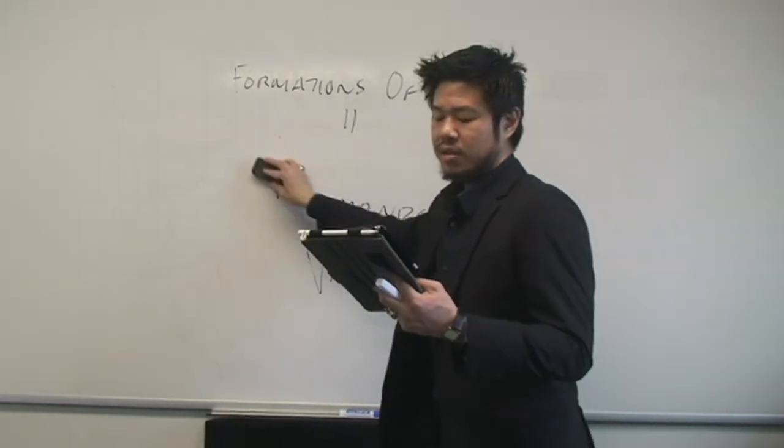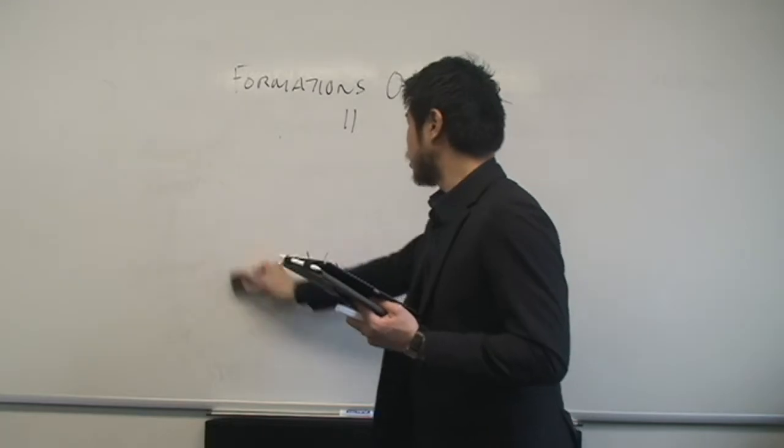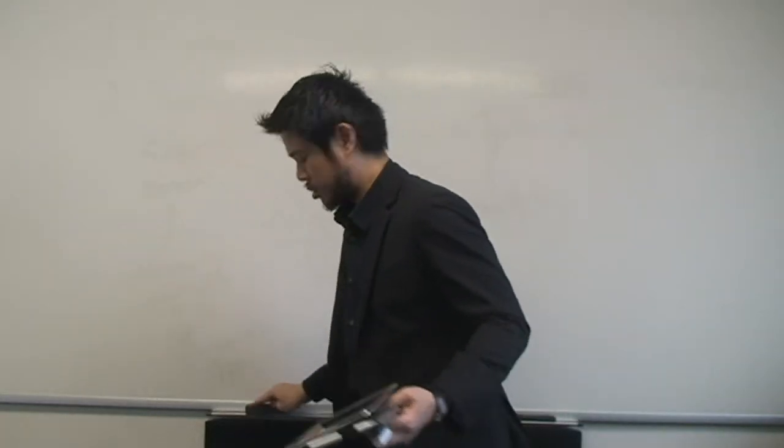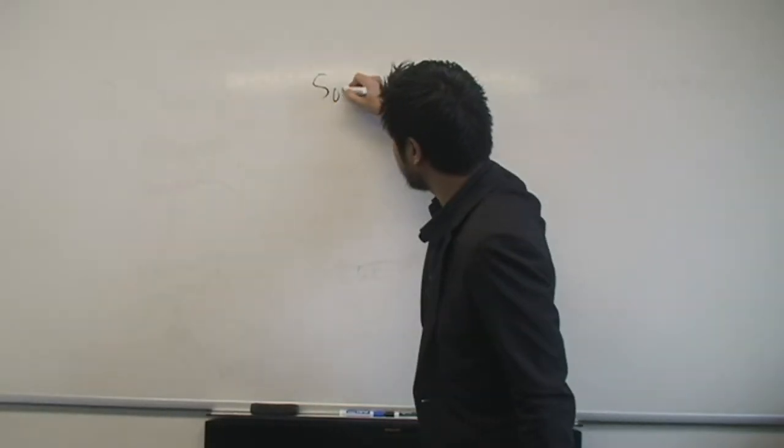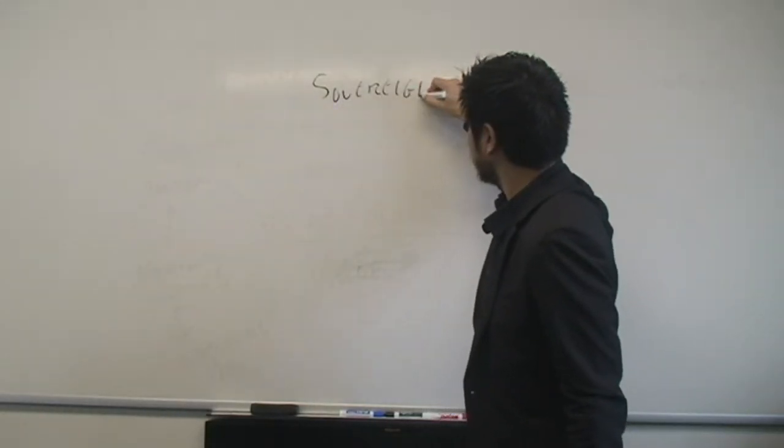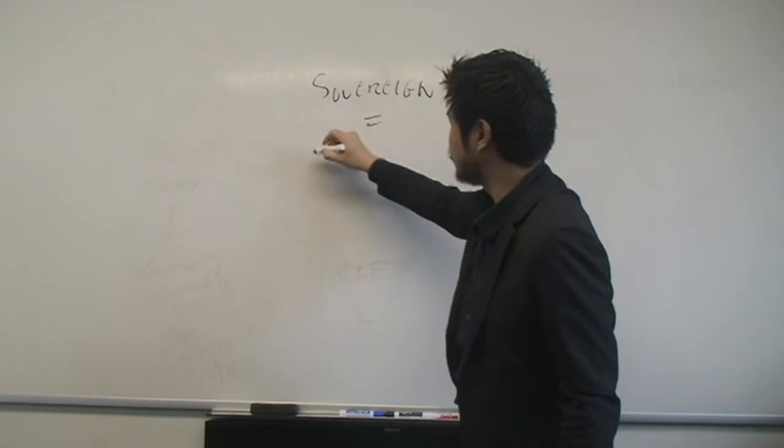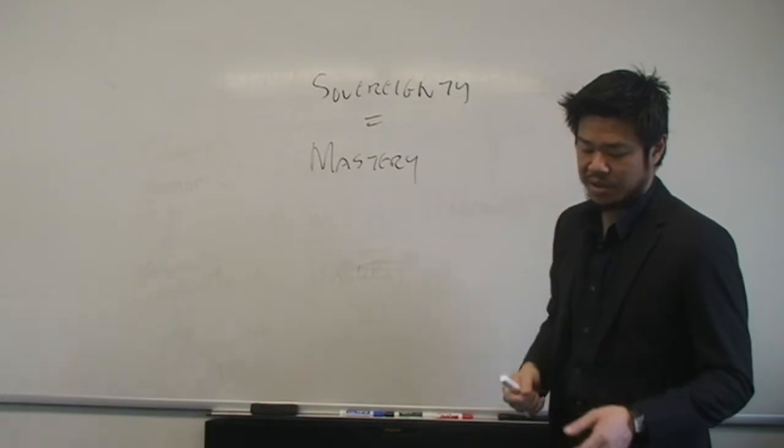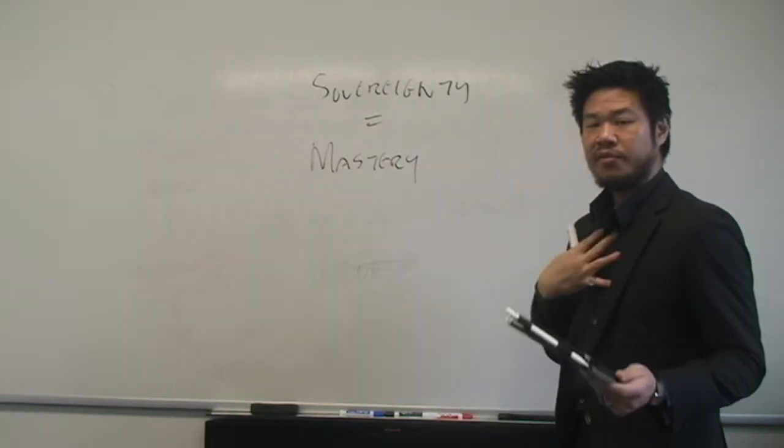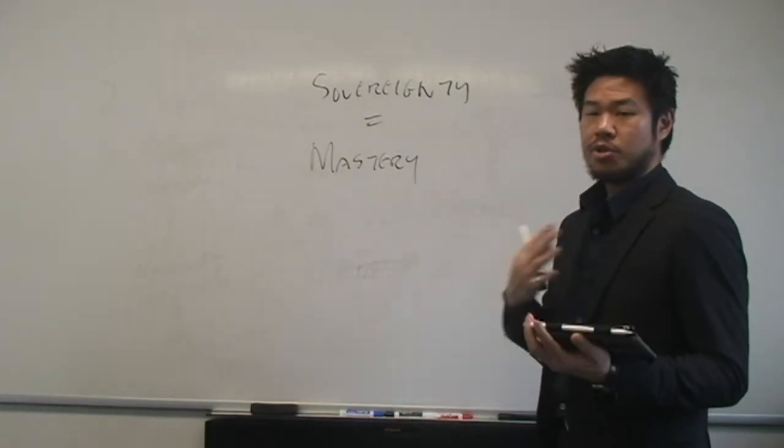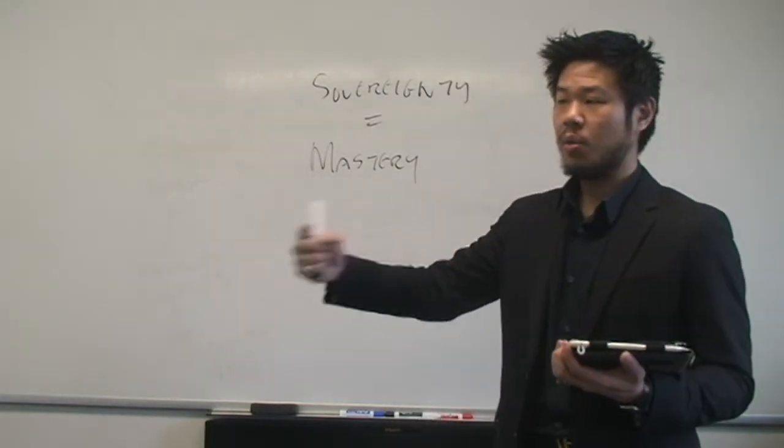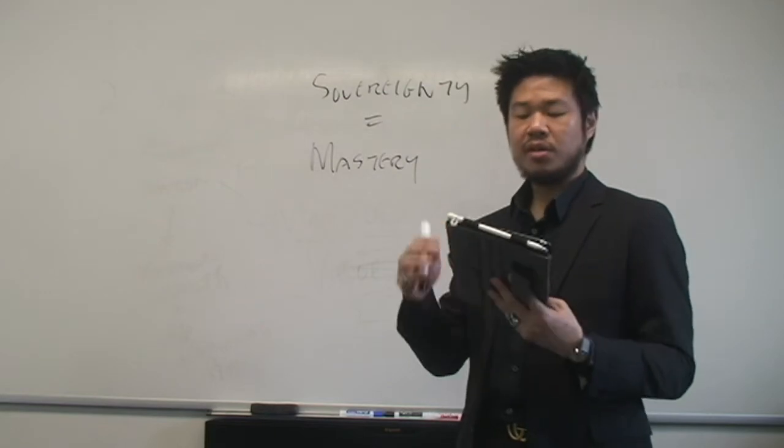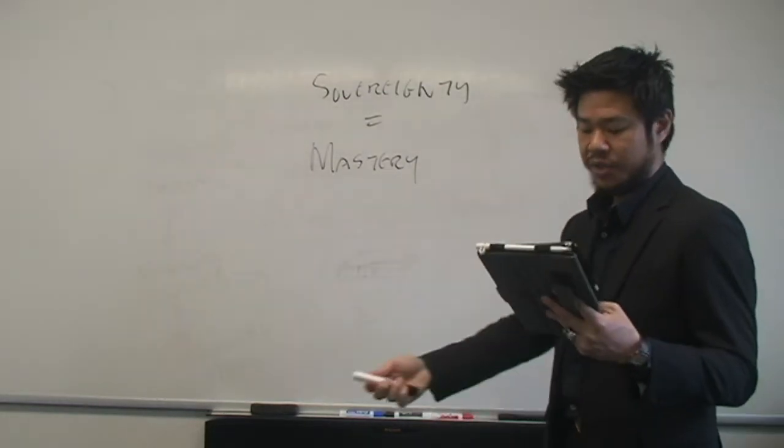A couple pages later, in 17, more kind of notions of this. How sovereignty means mastery. And mastery, not only over myself, I am a strong, independent individual. But it's always comparative. It's always relational. I am sovereign over you, right? Mastery over you.